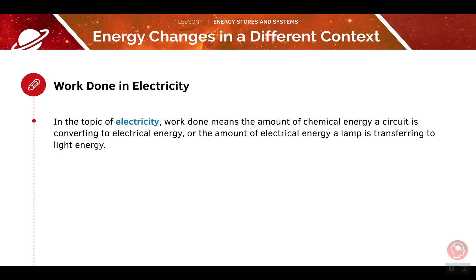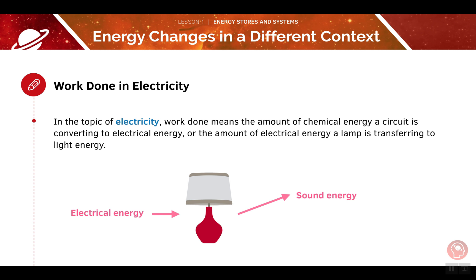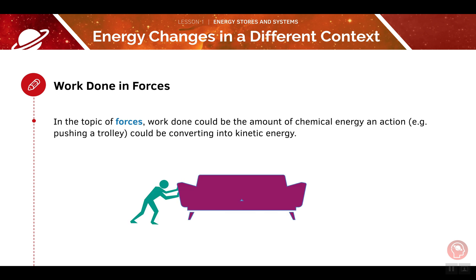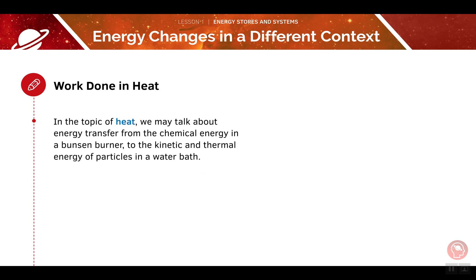For now, we'll consider the term work done in relation to electricity. This is the amount of chemical energy a circuit will convert into electrical energy. In a lamp, we can convert electrical energy into light energy; however, some of the electrical energy is also converted into wasted energy such as sound or heat energy. When we look at work done in forces, this is the amount of chemical energy used up in doing an action. For example, the work done when someone pushes a sofa will be equal to the amount of chemical energy converted into kinetic energy.